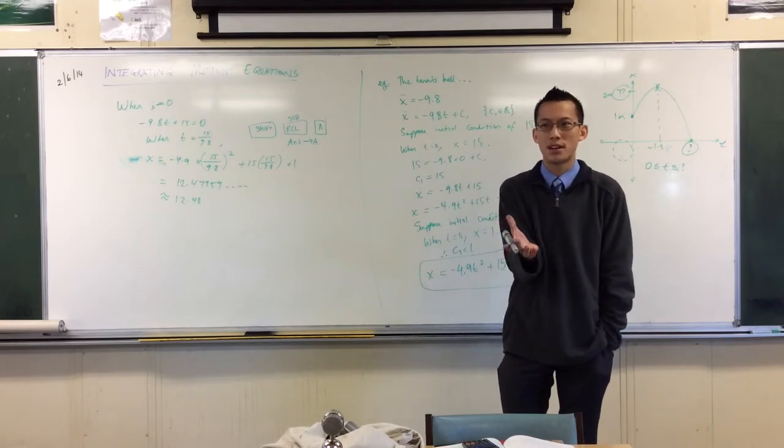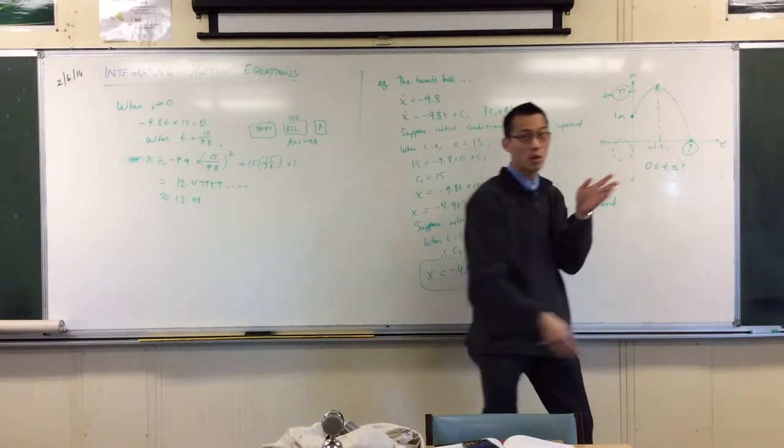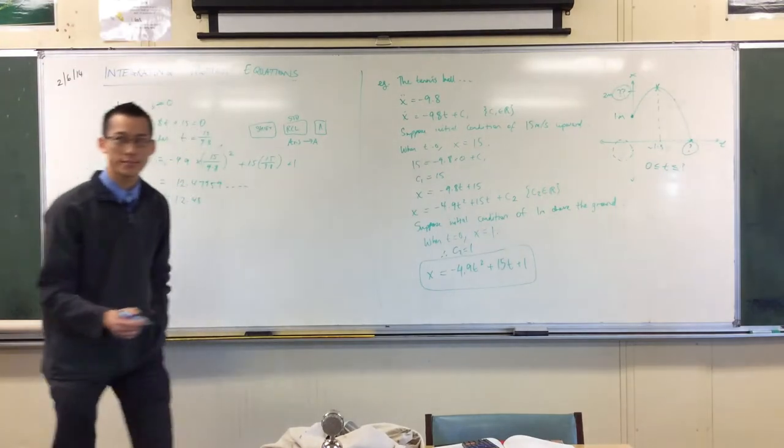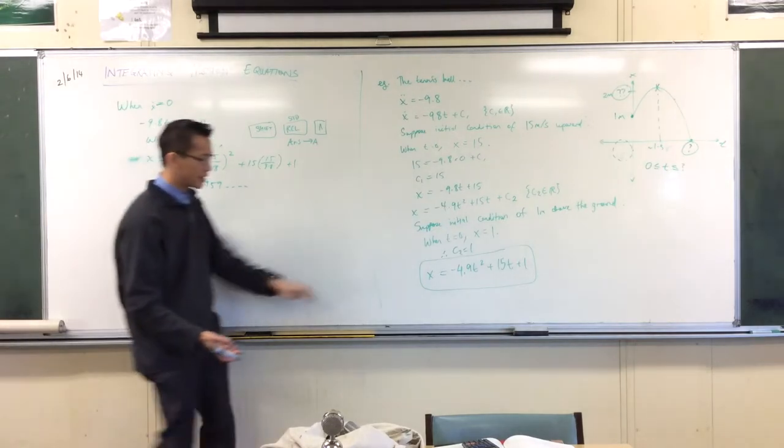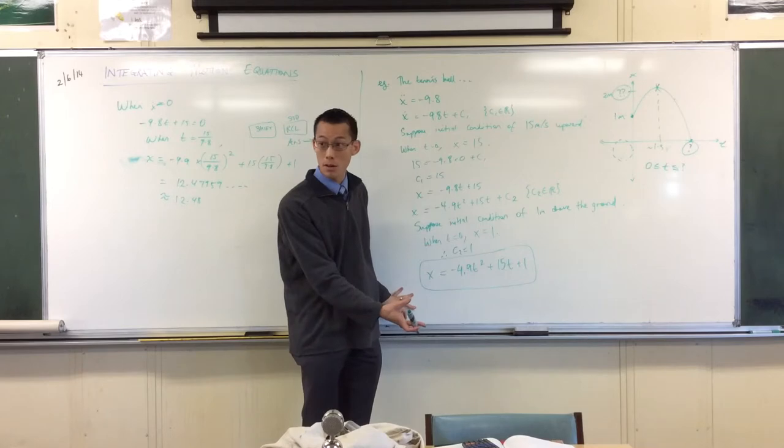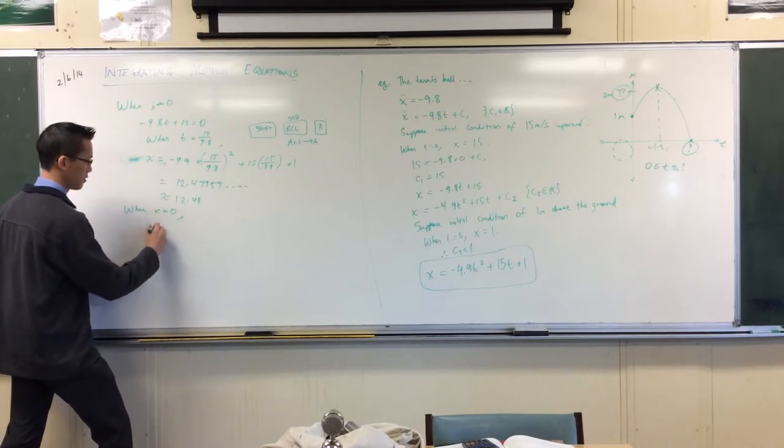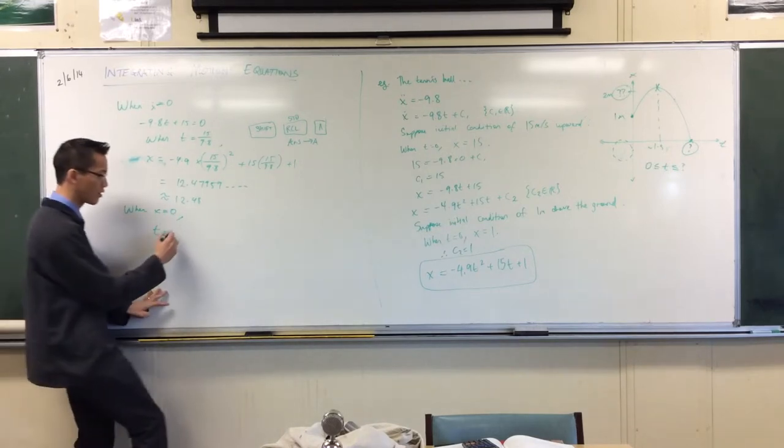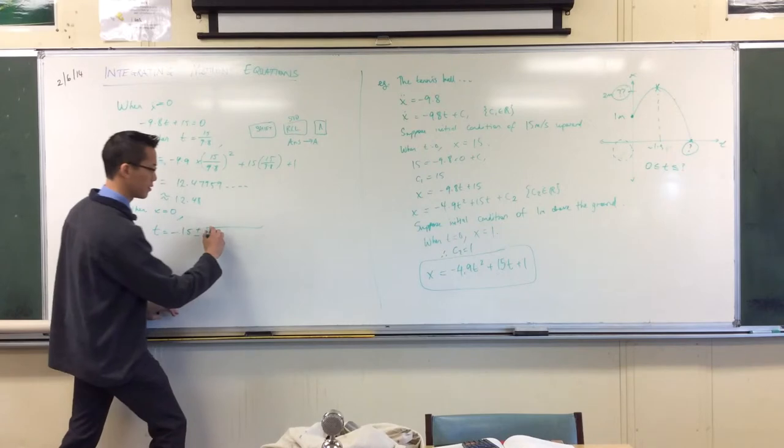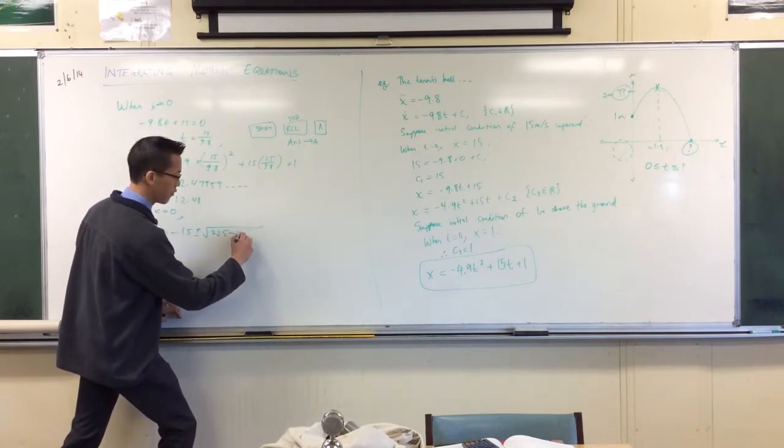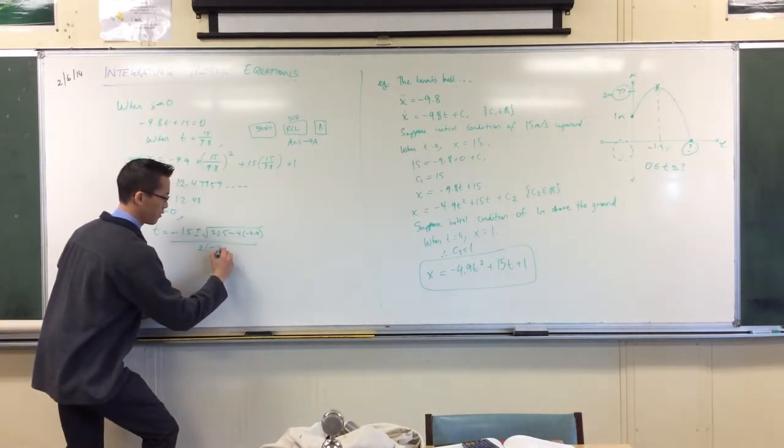What was the other piece of information I was after? I wanted to know where it hit the ground, so I want to know this value here. So what am I going to have to solve to get that? Which equation? I want displacement equals zero. So I'm going to take the displacement equation and obviously I'm going to have to use the quadratic formula. It's a quadratic in t, so that's why I've got t equals, and I'll go, what do we got? Negative 15 plus or minus the square root of 225 minus four lots of negative 4.9, all over two lots of negative 4.9.